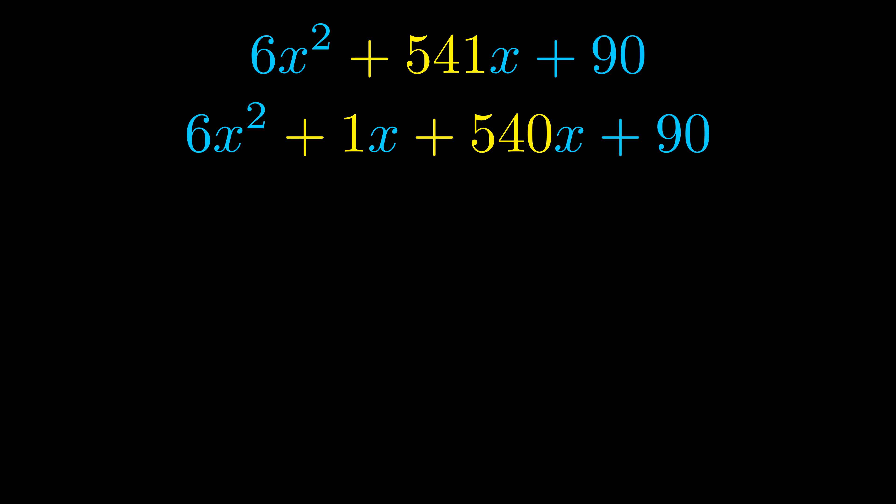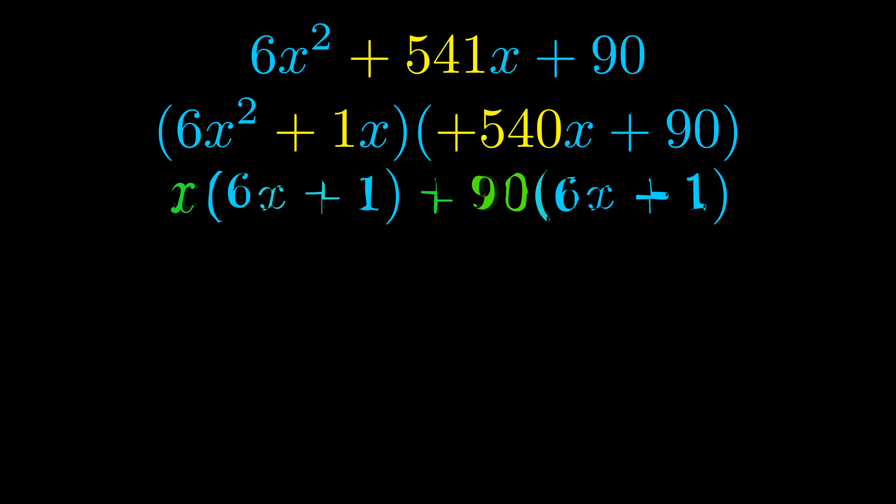Once we've done this, we go ahead and we put parentheses around the first term and the last term, and we do that so that we can take the greatest common factor out of both terms. We can see the greatest common factor is now outside in green.